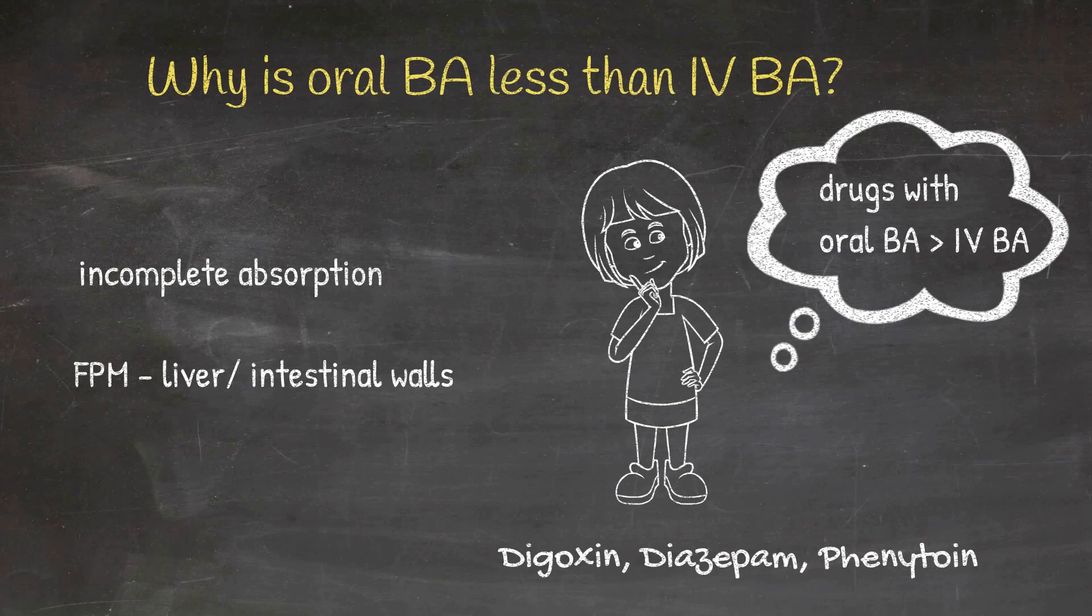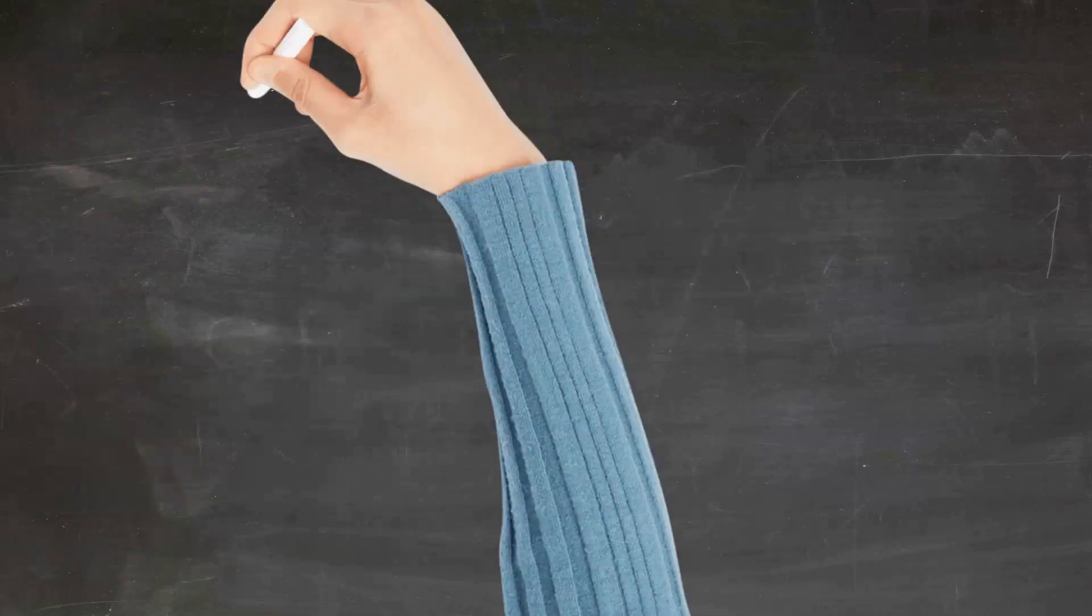Phenytoin has very less solubility. So usually it precipitates at the injection site. That's why the intravenous bioavailability is less compared to oral bioavailability.